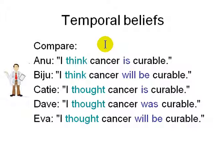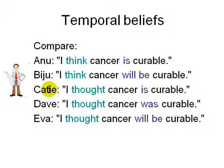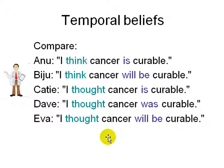Let's compare all the different ways beliefs can exist, involving time and knowledge and belief. Anu: 'I think cancer is curable.' Biju: 'I think cancer will be curable.' Is and will be — is there a difference? Katie: 'I thought cancer is curable' — Katie thinks that she thought in the past that cancer is curable at the current point. Dave: 'I thought cancer was curable' — in the past he thought cancer was curable, and maybe now he doesn't. Eva: 'I thought cancer will be curable' — a belief in the past that in the future cancer will be curable. So there are many different versions involving time, belief, and knowledge.